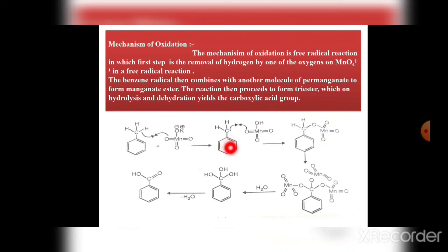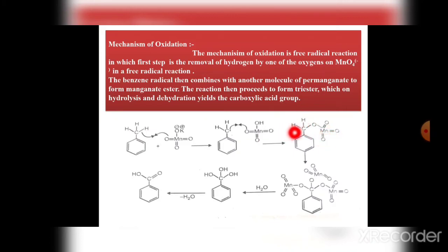The benzyl radical then combines with another molecule of permanganate — shown by half-curly arrows — forming a C–O–Mn bond complex. The remaining C–H bonds again undergo the same mechanism: cleavage of the C–H bond and combination with KMnO₄, forming a complex. That means the benzyl radical combines with another molecule of permanganate to form a permanganate ester.